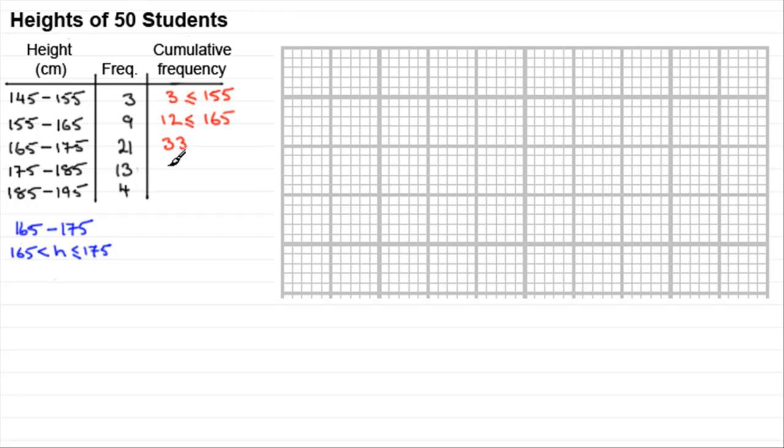For the next value, how many people are going to be less than or equal to 185? Would it be the cumulative total of 13, 21, nine, and three, which comes to 46? And finally, how many people less than or equal to 195 centimeters? It's going to be a total of all of these, 50. And it's always a good idea to make sure that you check that you get the total of all your frequencies.